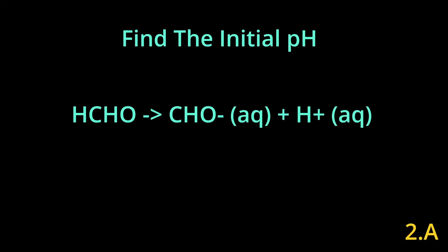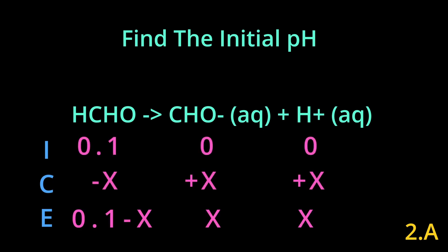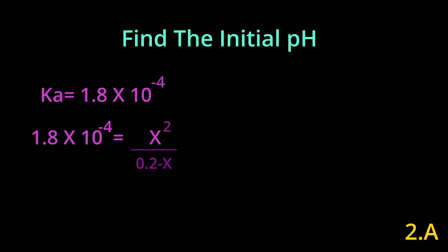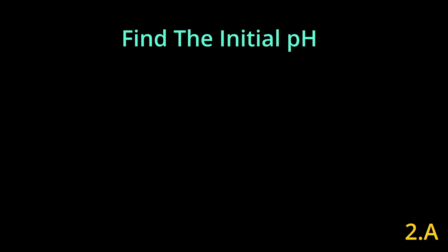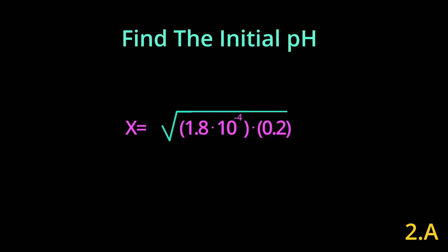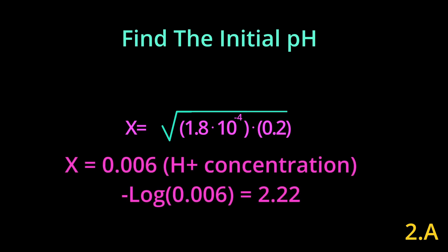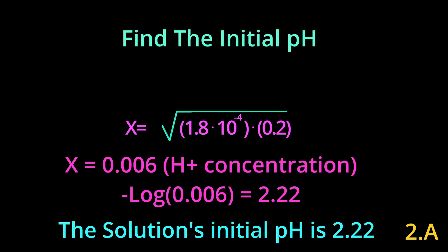In question 2A, you find the concentration of formic acid and plug it into an ICE table, then solve for x. You plug your values in and come up with Ka equals x squared divided by 0.1 minus x. The 100 rule applies, so you can cancel out the x in the denominator and it becomes x squared over 0.1. You solve for x by taking the square root, and you get x equal to 0.006, which is our hydronium concentration. Plugging into negative log of the hydronium concentration gives a final answer of 2.22.